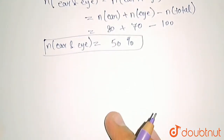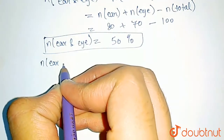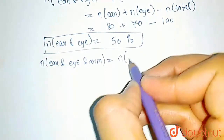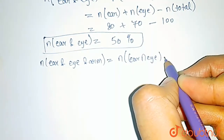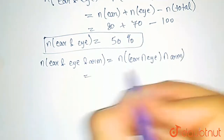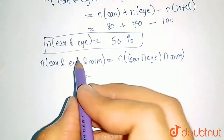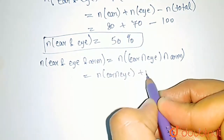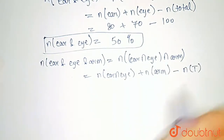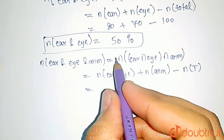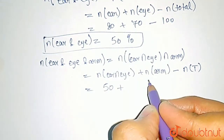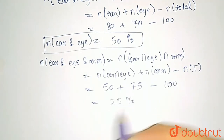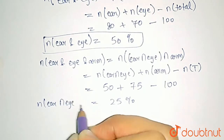Similarly, let us find number of people who lost ear, eye, and arm. This is N(ear intersection eye intersection arm). Using the formula again: N(ear intersection eye) plus number who lost arm minus total = 50 + 75 - 100 = 25%. So 25% of combatants lost ear, eye and arm.